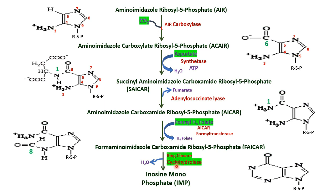The ring is now almost complete. With ring closure by cyclohydrolase and elimination of water, the first purine nucleotide is formed — inosine monophosphate (IMP).